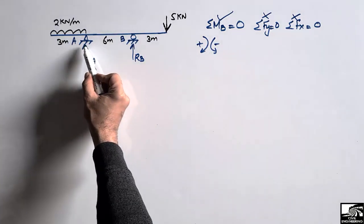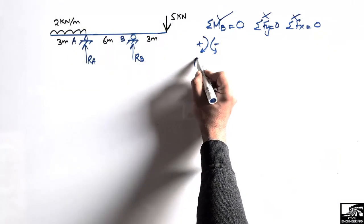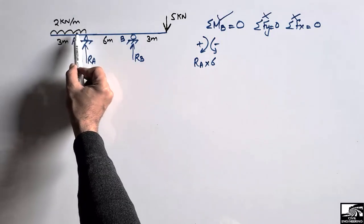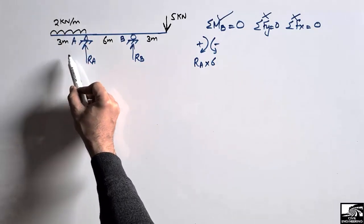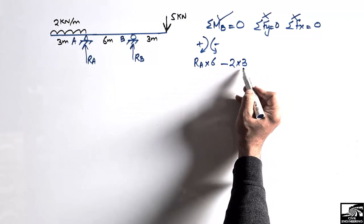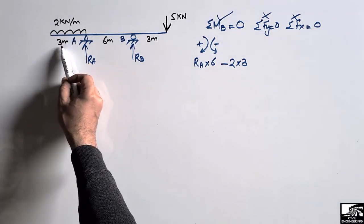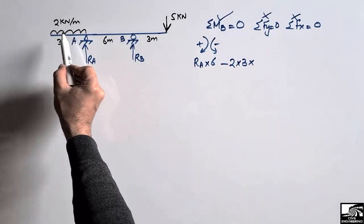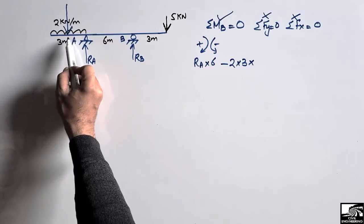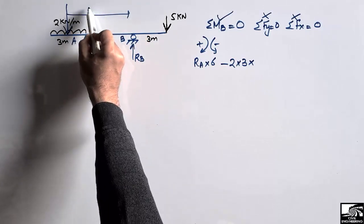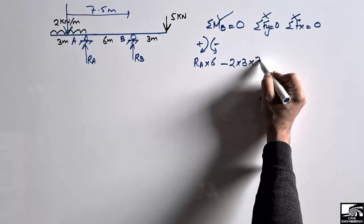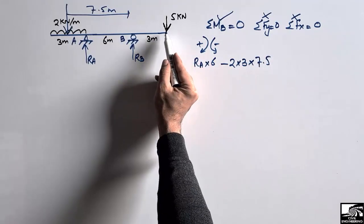RA will create a clockwise moment about point B, so it will be RA into 6, where 6 is the moment arm for RA. Now the force of 2 kN per meter is a distributed load acting in the downward direction, so it will create an anti-clockwise moment about point B — negative. It is minus 2 multiplied by the distance of 3 meters, because this load is distributed over 3 meters, multiplied by the moment arm. The load will act at the center, which is 3 divided by 2, and the total distance from the midpoint to point B is 7.5 meters.